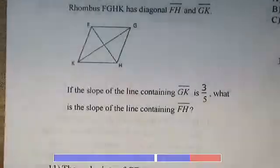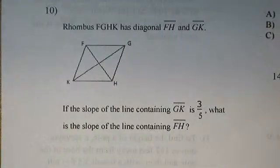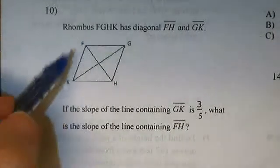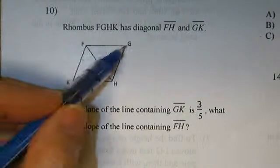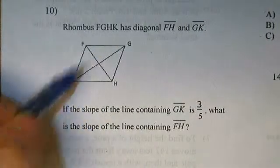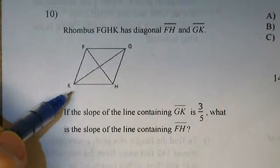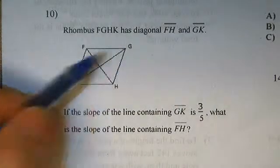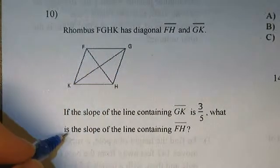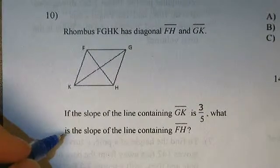Problem 10. We are given a rhombus F, G, H, K with diagonals. If the slope of the line containing G, K is 3 fifths, what is the slope of the line containing F, H?